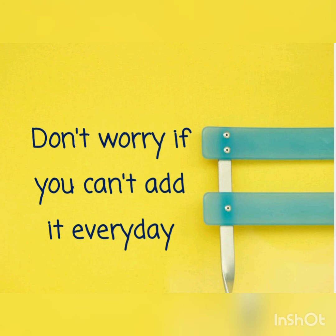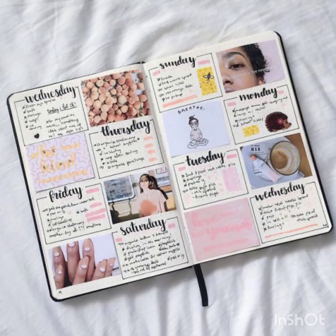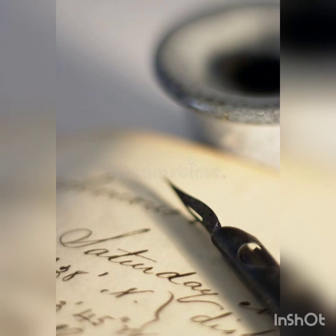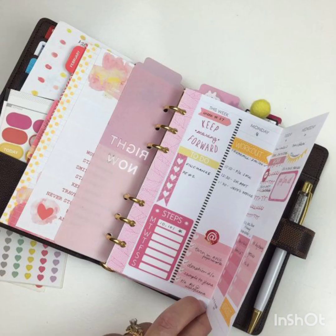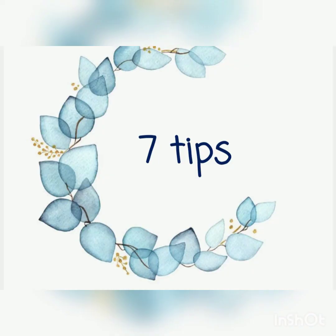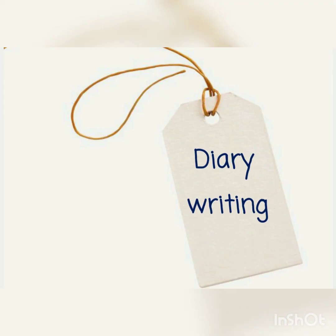The seventh tip is don't worry if you can't write every day. You're not committed to writing in your diary every day just because you have one. Add to it whenever you feel like it — skip a day, skip a week, it does not matter. What's important is that you add to it from time to time; the more often, the more fun it will be afterwards. So these are the seven tips on how to write a diary.